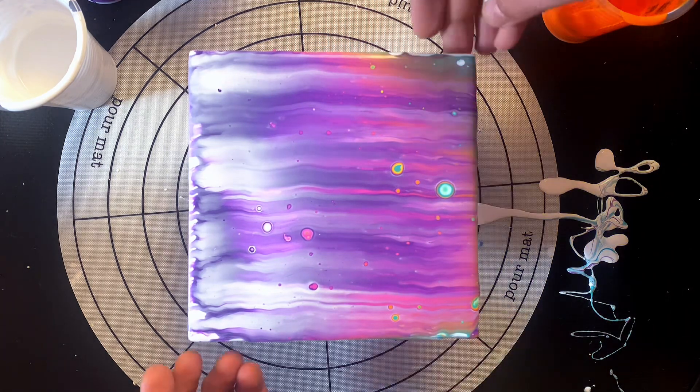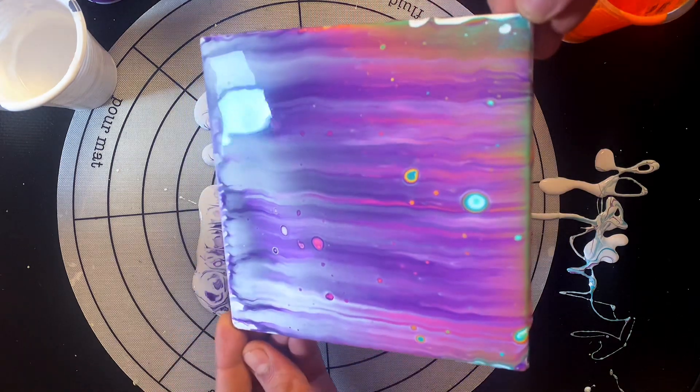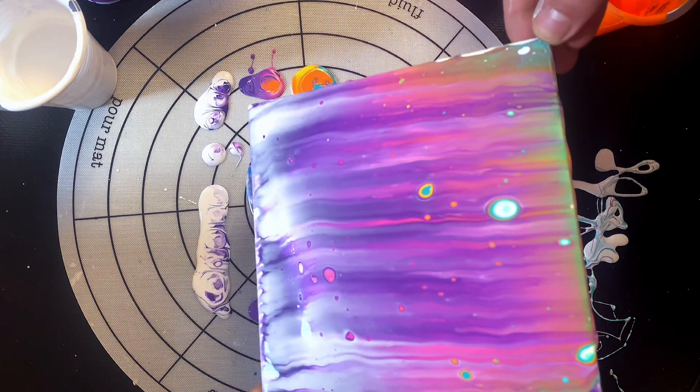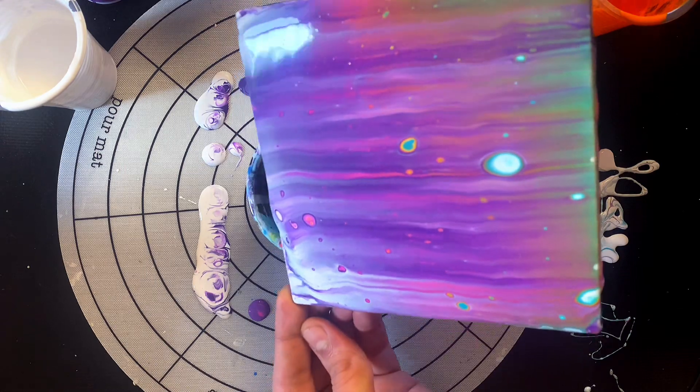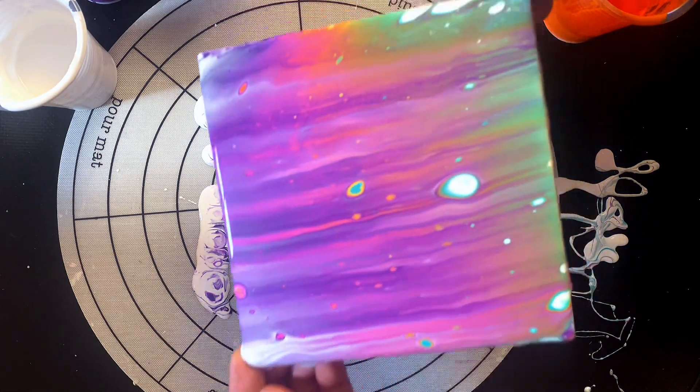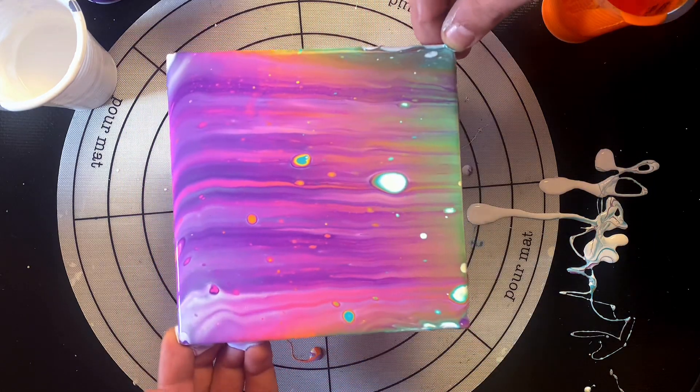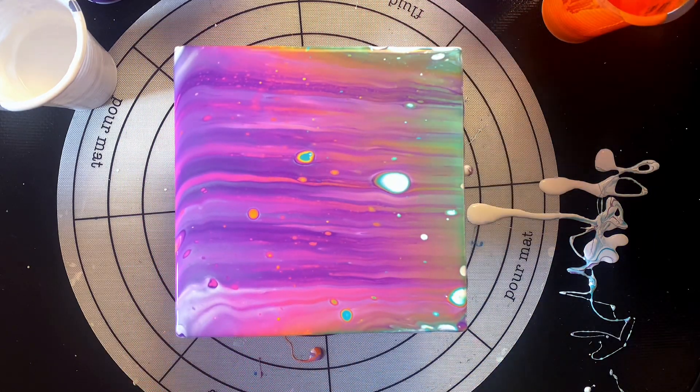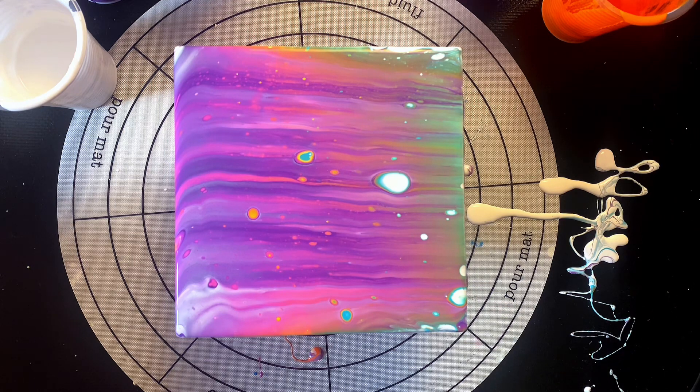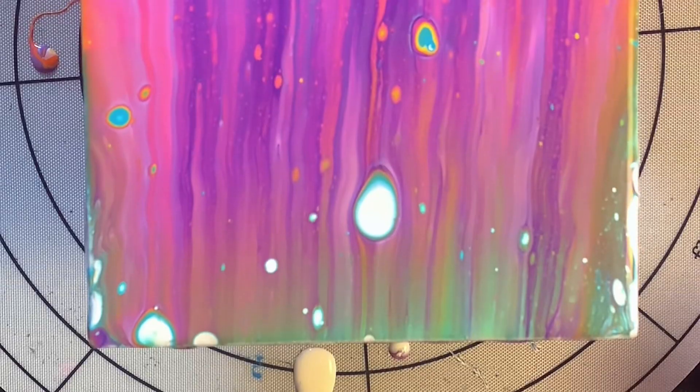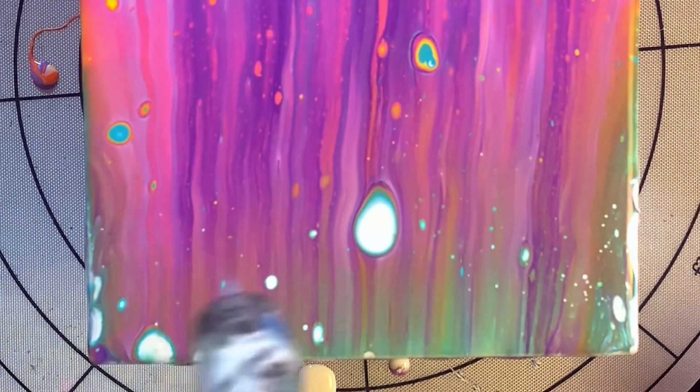So before we do that, I want to tilt the canvas in the direction from where you swiped from to kind of maintain your gradient. If I had kept it as is, we would have lost a lot of the turquoise and had a majority of purple at the top. I'm happy with this tilt, and now I'm just going to fetch the torch and introduce some heat.